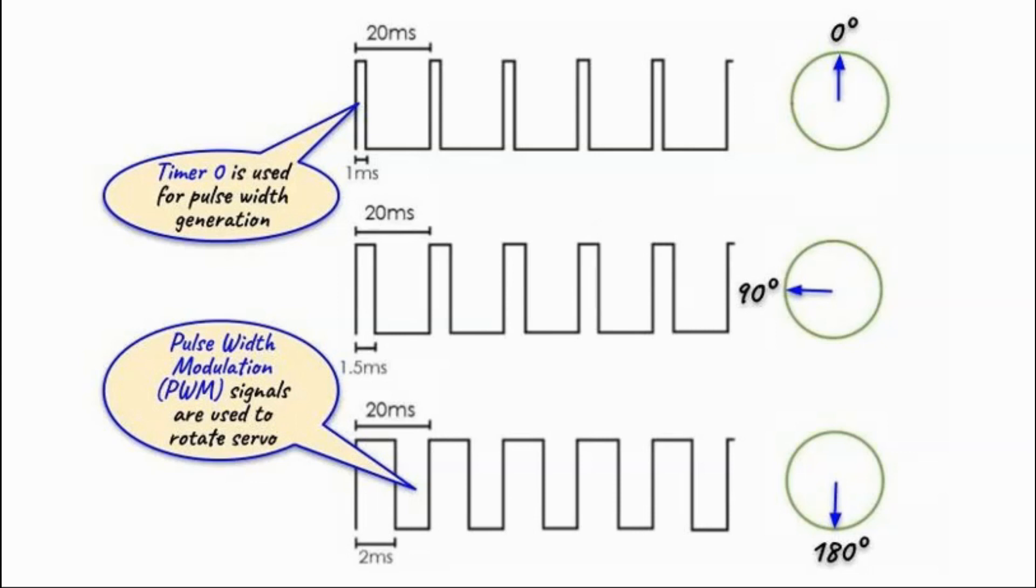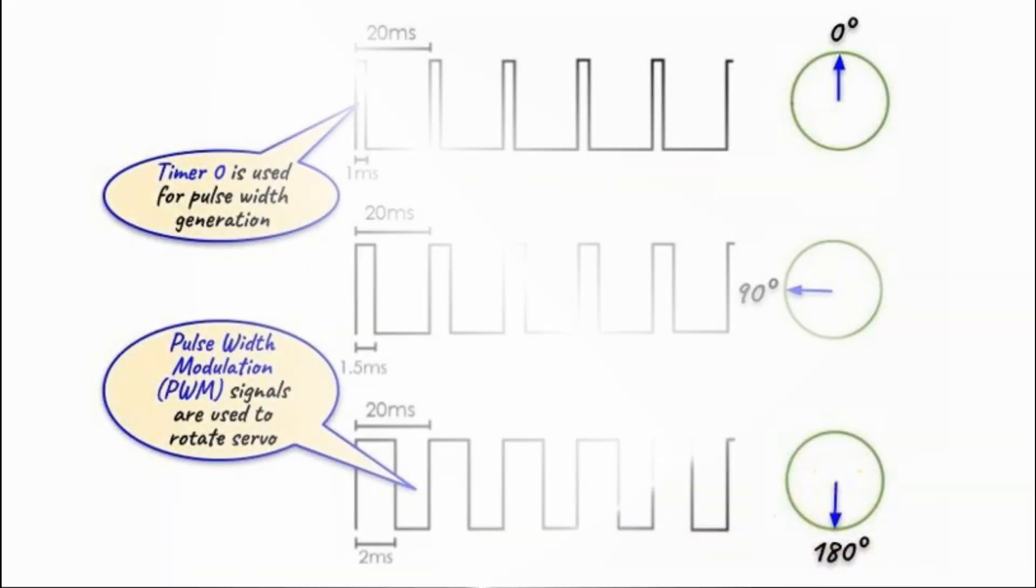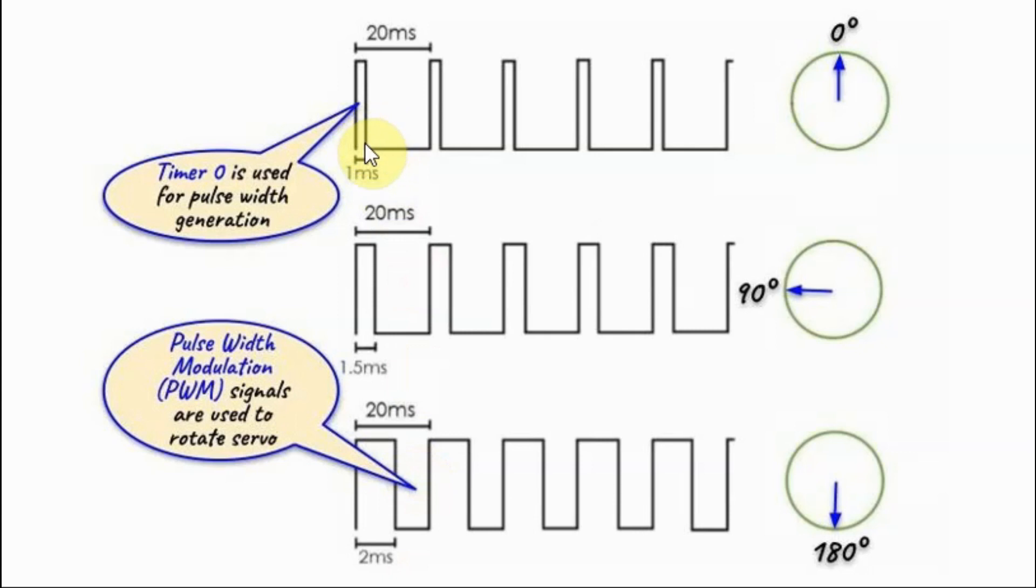The servo motor can be rotated from 0 to 180 degrees by applying a series of pulse width modulated signals. A rectangular waveform of 1 millisecond pulse width and 20 millisecond period will position the servo at 0 degrees, while a pulse width of 1.5 milliseconds will put the position at 90 degrees, and a 2 millisecond pulse width will position the servo at 180 degrees. Therefore, changing the pulse width of this periodic signal from 1 millisecond to 2 milliseconds will rotate the servo motor from 0 degrees to 180 degrees.